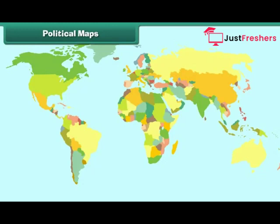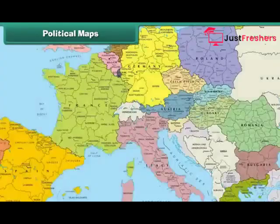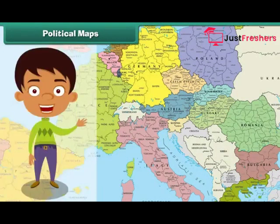A political map is a map that shows lines defining countries, states and territories. Its purpose is to show the political borders. For example, the world political map shows all the countries of the world with their capitals. Similarly, the political map depicts all the political boundaries and also the names and capitals of all the countries in Europe. Thus, political maps help us in understanding the world better.